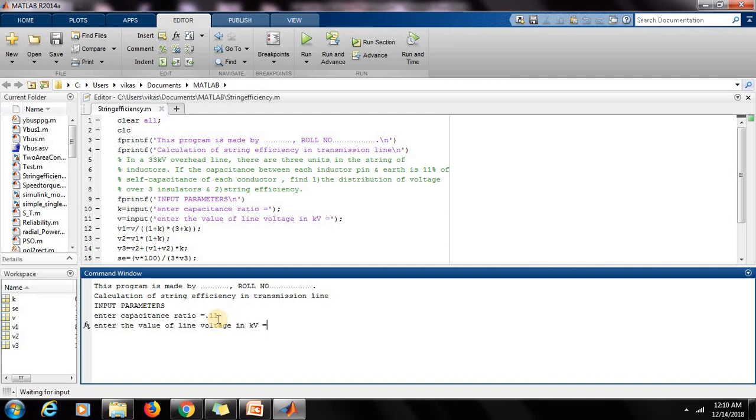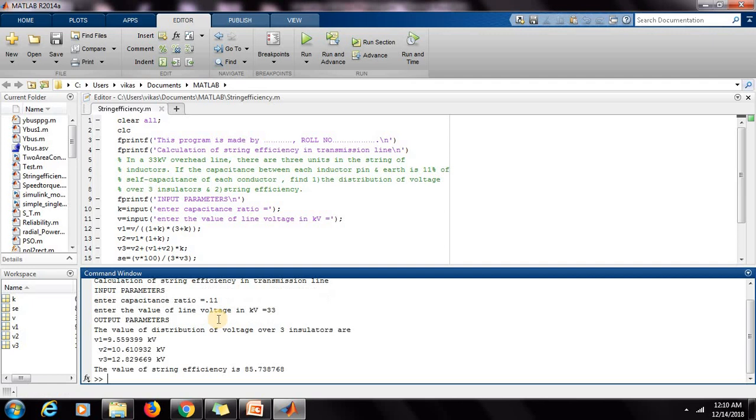So whenever I am running, capacitance ratio is 0.11 and the input voltage is 33. So for this data, V1 is 9.55 kV, V2 is 10.61, V3 is 12.82, and the string efficiency is 85%.